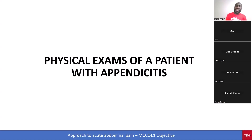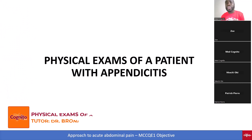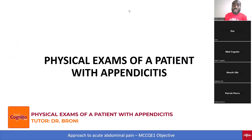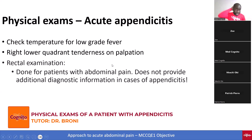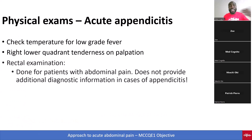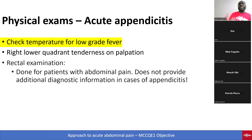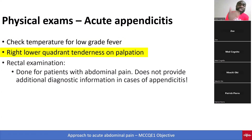If you have a patient with acute appendicitis, what physical exam features are you looking out for? This is very critical. Number one, in any patient with acute appendicitis, because of inflammation or infection, make sure you check the patient's temperature. Number two, physical exam: the patient may present with right lower quadrant tenderness.